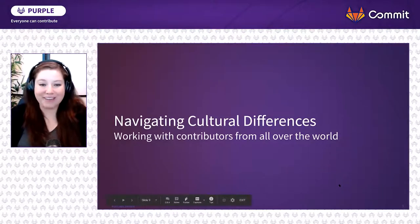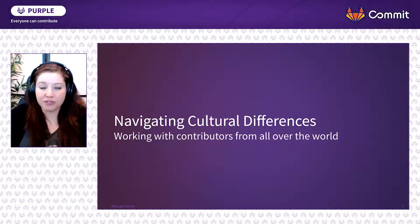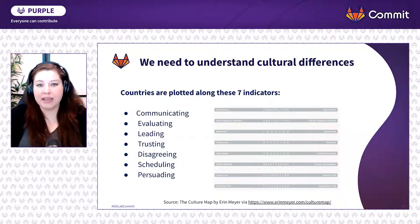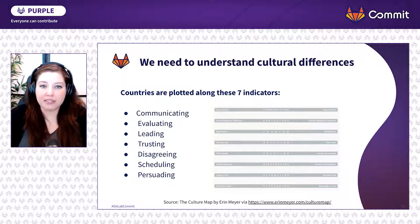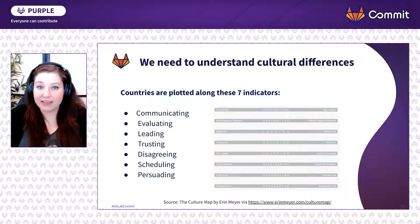Next up, we have navigating cultural differences, because as we continue to expand our communities and work with more contributors from all over the world, we need to understand how to best work together. I love this book by Erin Meyer called The Culture Map. She's done a lot of research on different cultures and plots them out along seven indicators: communicating, evaluating, leading, trusting, disagreeing, scheduling, and persuading. I don't have time to go into all of them, but I'll highlight a few.